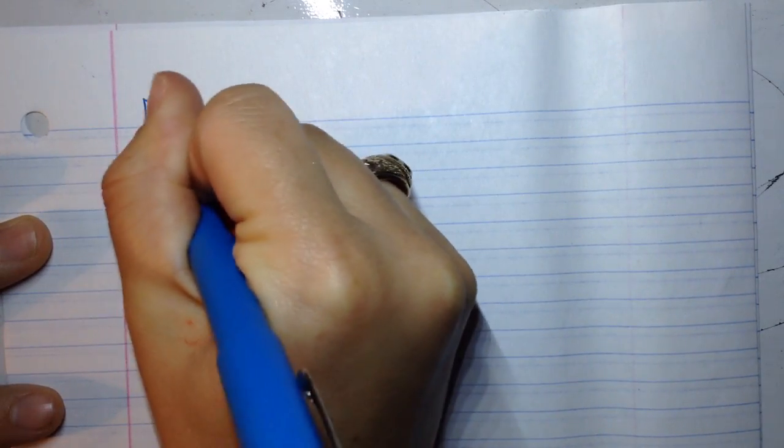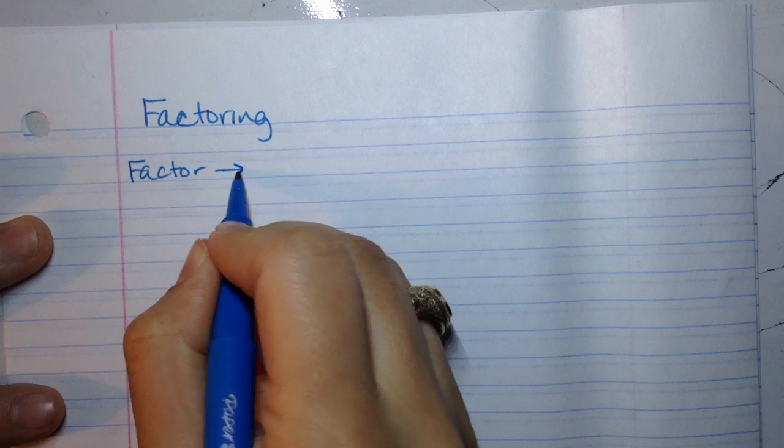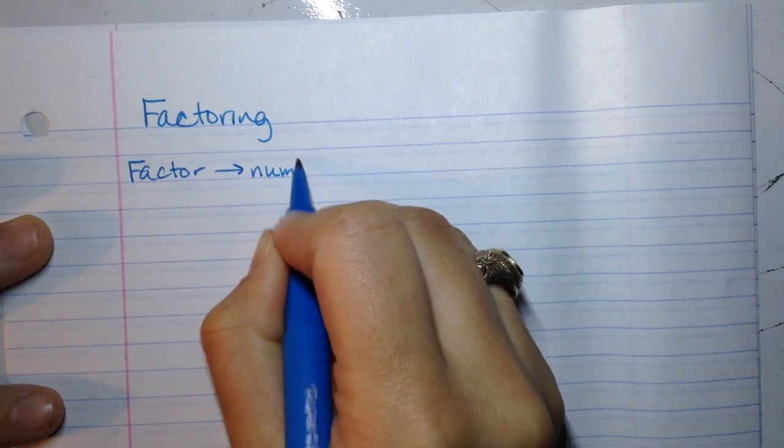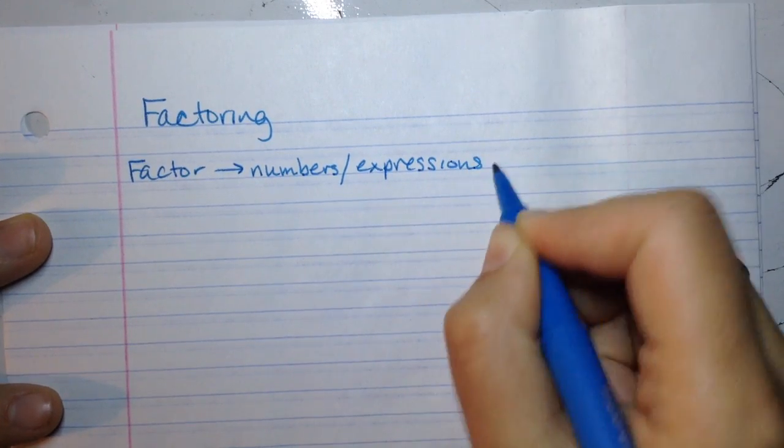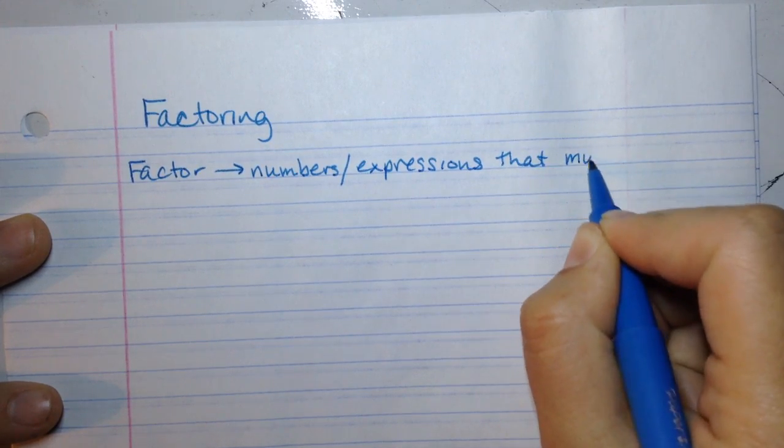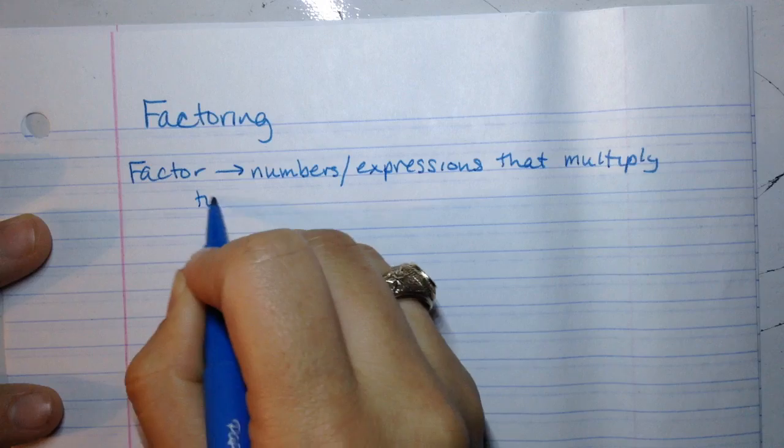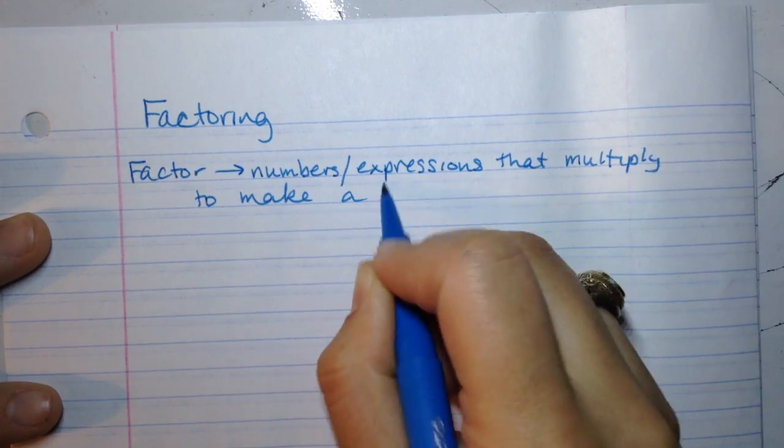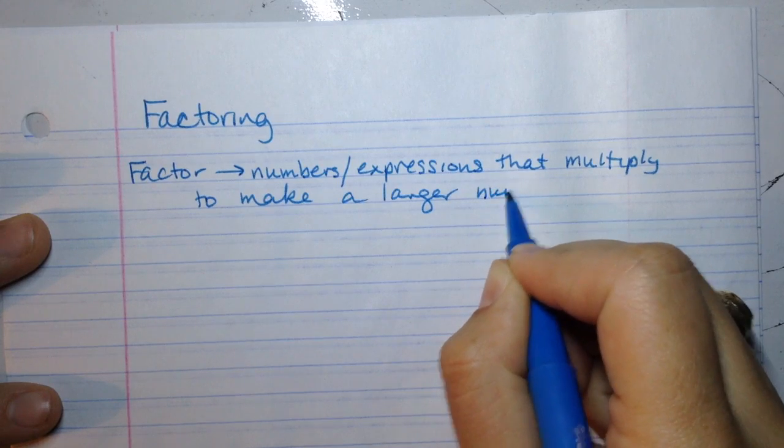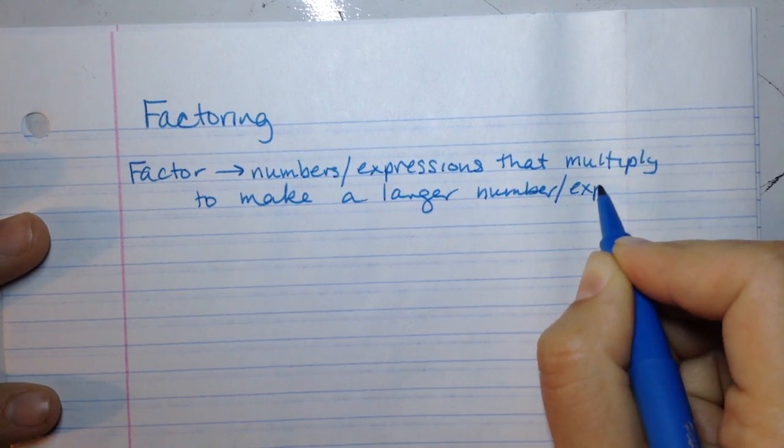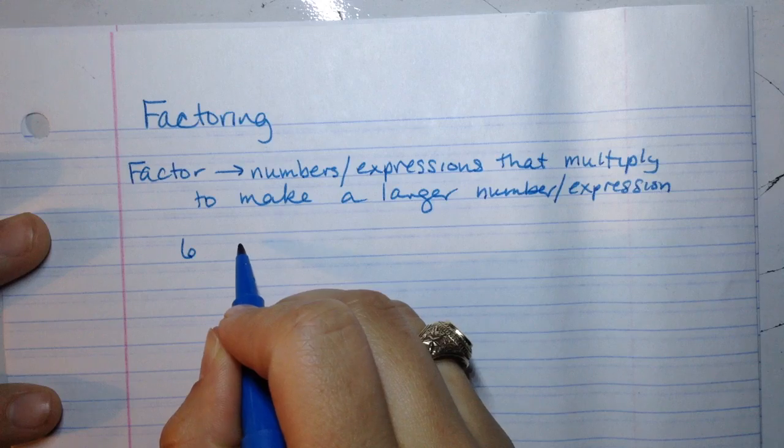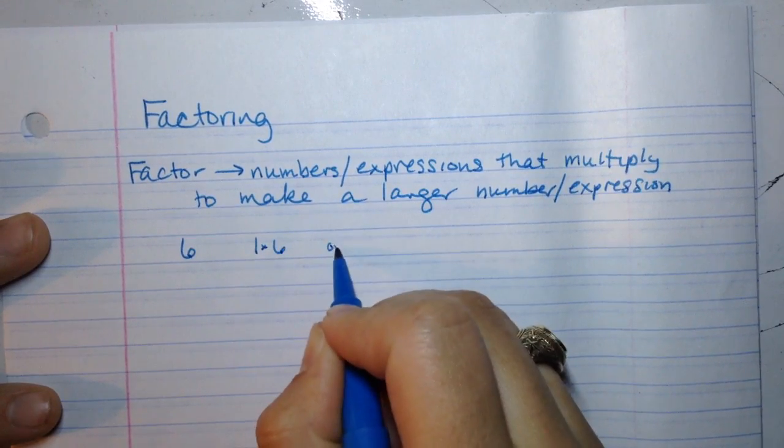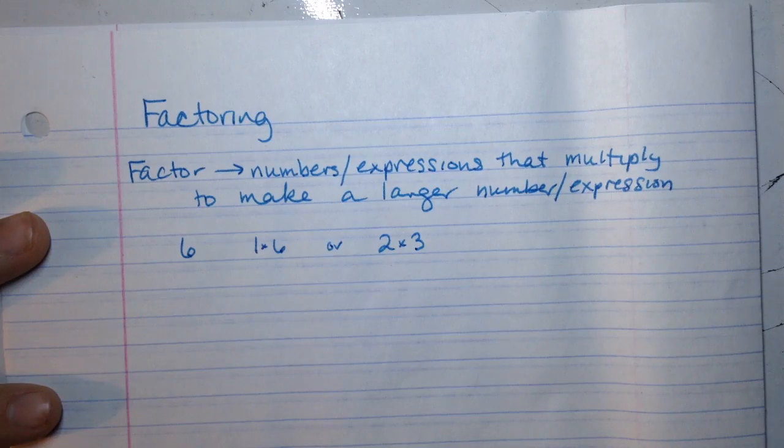Today we are reviewing factoring. A factor is either the numbers or expressions that multiply to make a larger number or expression. For example, to multiply to get 6, 6 has the factors of either 1 times 6 or 2 times 3. Those are its factors.